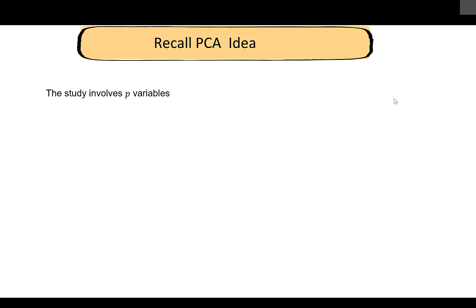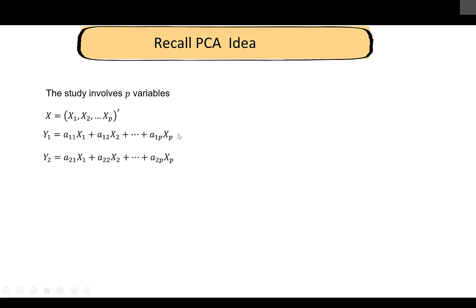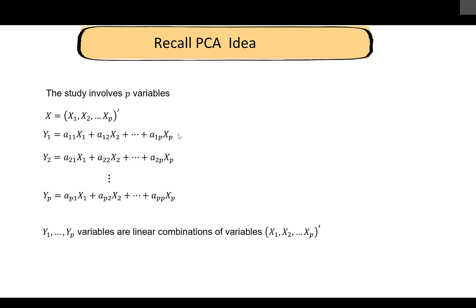Before we proceed, a quick recap. We are dealing with p variables — X has all of the p variables. In PCA we are interested in looking at linear combinations of these p variables: y1 is a linear combination, y2 is another linear combination, and so on up to yp, the pth linear combination.